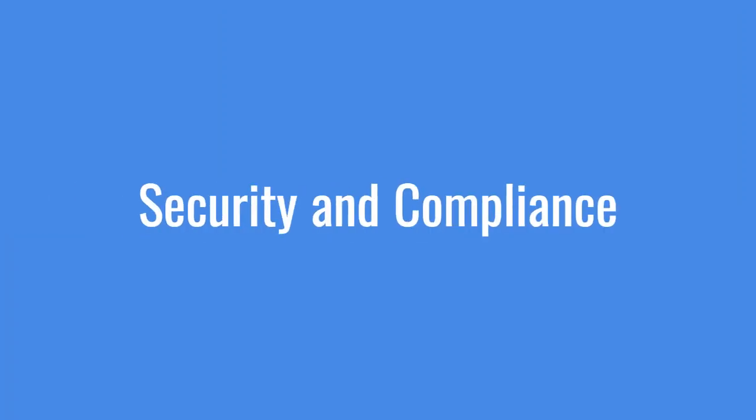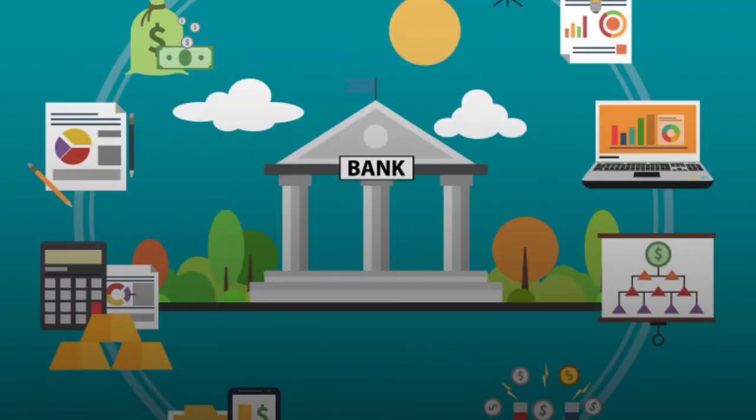Then security and compliance — data security implements robust security measures to protect customer data and financial transactions. Compliance ensures adherence to regulatory requirements and compliance standards. Nowadays, security and compliance are very important and are a major focus in implementation. The core banking system adheres to all security and compliance standards.